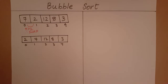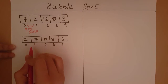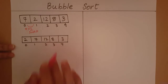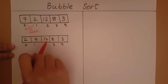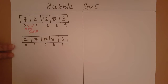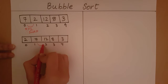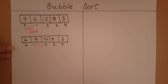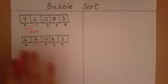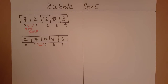Let's look at the next two elements at index 1 and index 2. 7 is less than 12, so for this pair, 7 and 12, they are in the correct positions. 12 should come after 7 because it's greater than 7, so it's fine. There is no swapping to be done in this case.